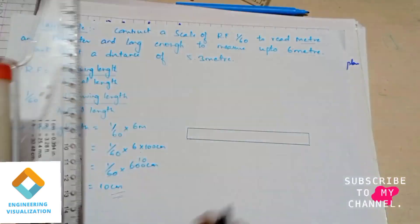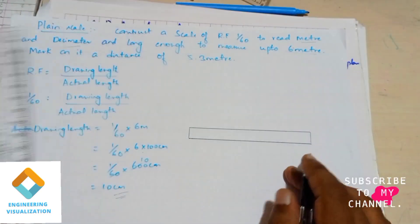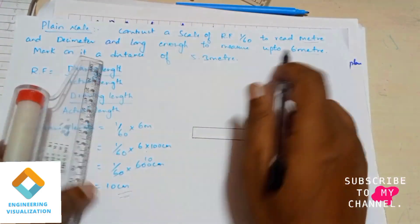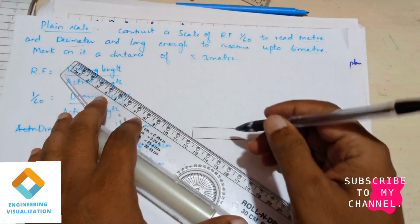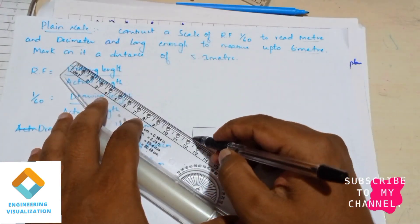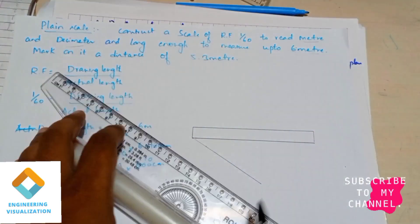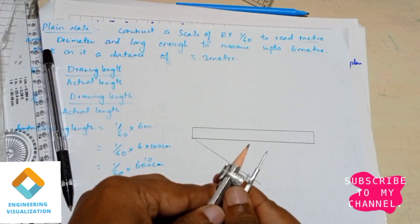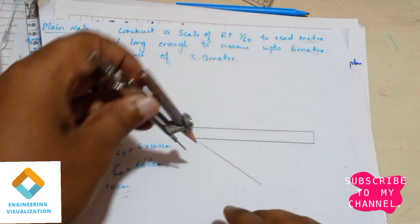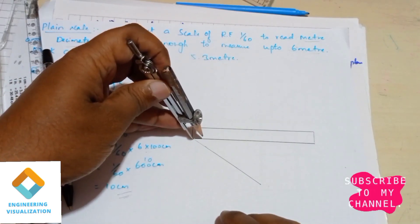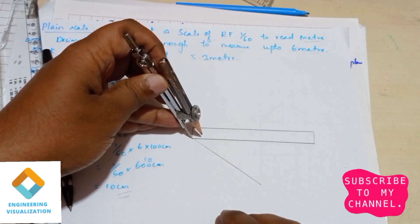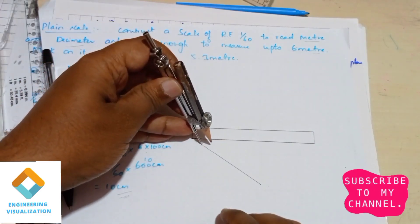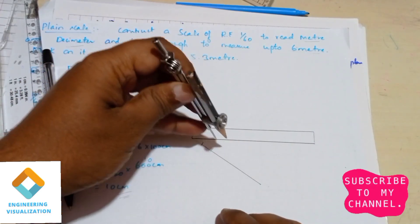Now we need to divide this scale into six equal parts, because the total length to measure is 6 meter. I'll be drawing an angled line at less than 90 degrees, and using a compass I'll be dividing it into six parts by cutting six arcs from one end.